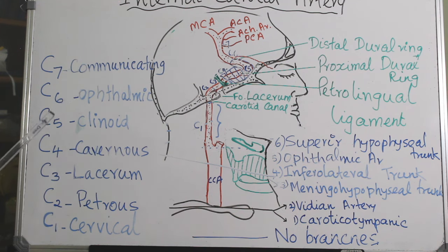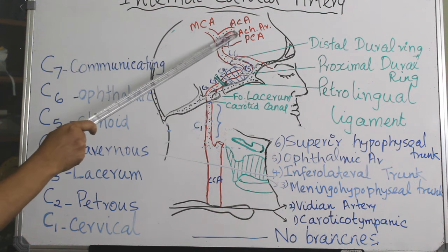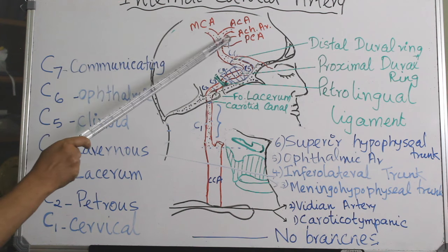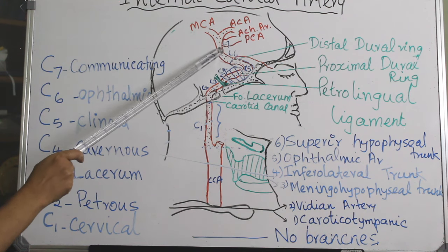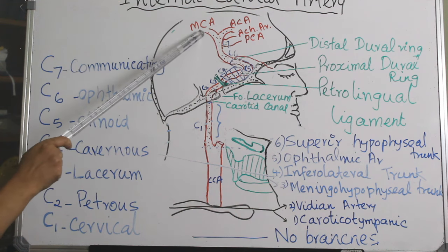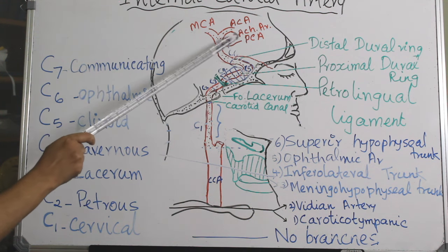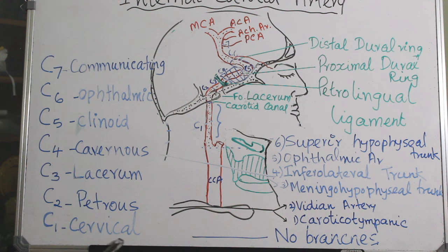C7 is the communicating segment, from the proximal origin of the posterior communicating artery to the bifurcation of the internal carotid artery into the anterior cerebral artery and middle cerebral artery. There is also an anterior choroidal artery in between. The branches of C7 include the posterior communicating artery, anterior choroidal artery, anterior cerebral artery, and middle cerebral artery.